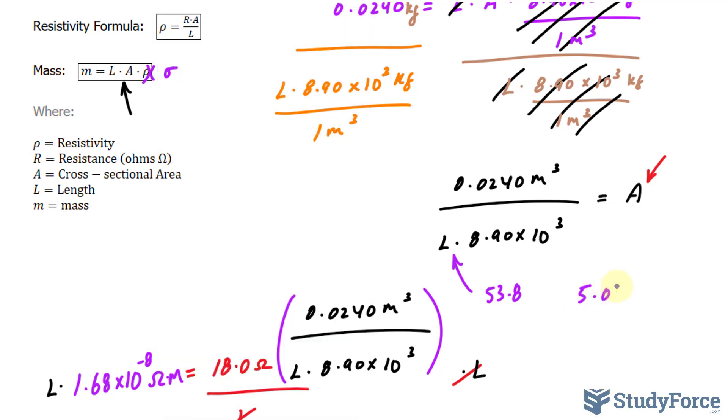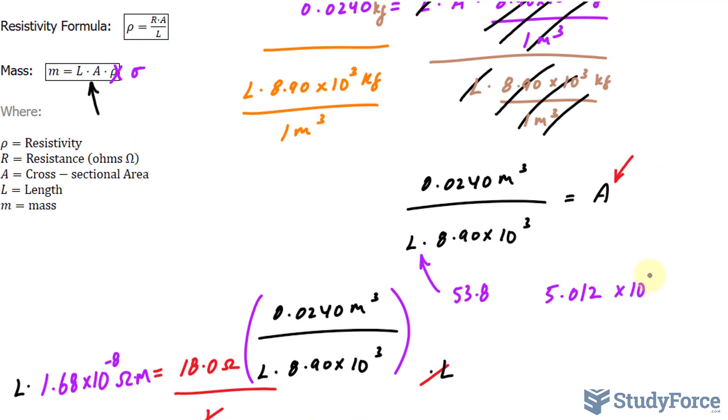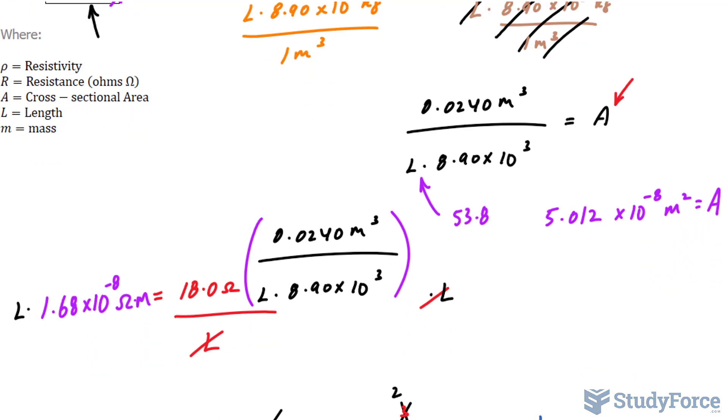5.012 times 10 to the power of negative 8 meters squared is the area. I'll use the relationship that area is equal to pi r squared. Assuming that the cross section is a circle. I'll throw this number now into here and solve for r.